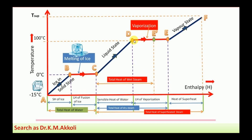After the saturation temperature is reached, if you heat further, the water starts boiling and converting into steam — this is from D to E on the diagram. This conversion of liquid water into vapor is called vaporization. The latent heat of vaporization is the amount of heat required to convert 1 kg of water at saturation temperature into 1 kg of vapor at saturation temperature.